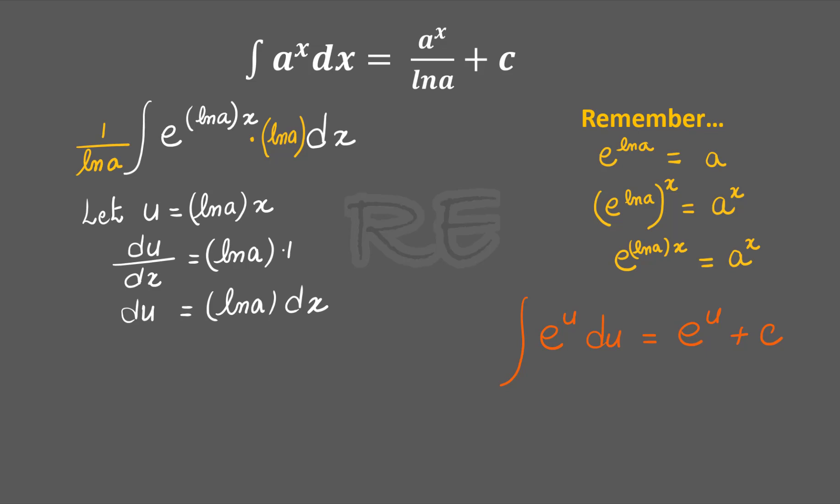So to create my du, I need ln a, so I'm going to multiply and divide by ln a. This is the trick I'm going to use to get my du. The integral becomes one over ln a, e to the ln a x times ln a dx.